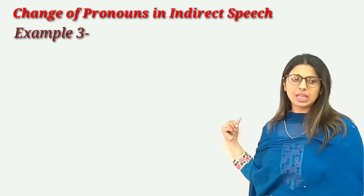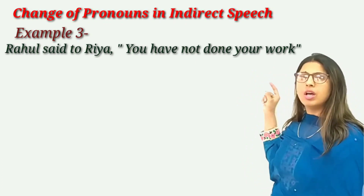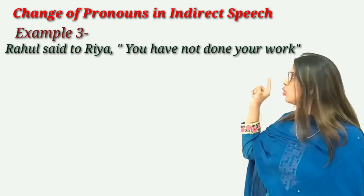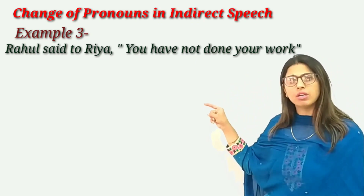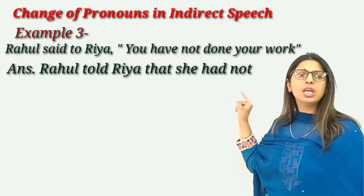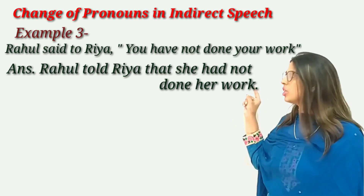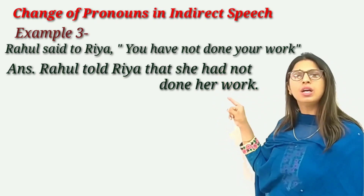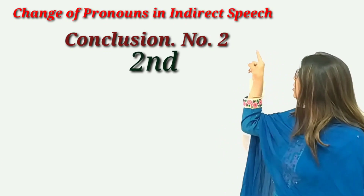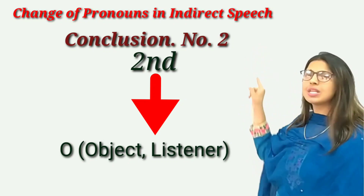Sentence number three: Rahul said to Rhea, 'You have not done your work.' We have 'you' inside the inverted commas, which stands for the second person. So 'you' will change according to Rhea, who is a girl. The answer would be: Rahul told Rhea that she had not done her work. This means the second person changes according to the object — the listener. Two stands for O.